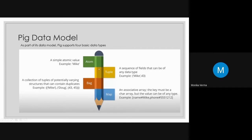If you have worked in Python, a lot of this will be easy to understand. A tuple is a sequence of fields that can be of any data type. It can have multiple data values separated by commas.